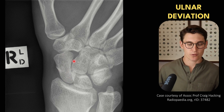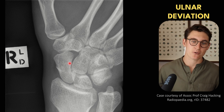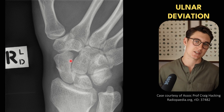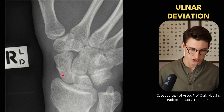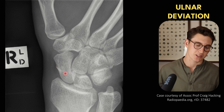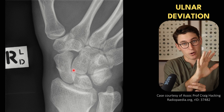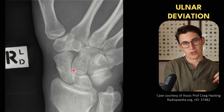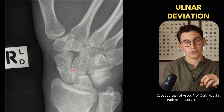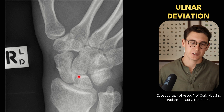The scaphoid has a distal pole and a proximal pole separated by what's known as the waist of the scaphoid. This is our most common site for fractures in an adult, so it's really important to see the integrity of the cortex around that portion. If pain doesn't allow a patient to perform ulnar deviation, we can take an angled view — a 30-degree angle view at the scaphoid — to give us that end-on look.